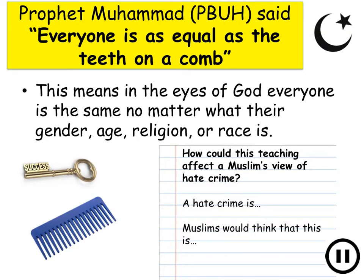It's time to look at another one of our key rules. This is a hadith: Prophet Muhammad, peace be upon him, said that everyone is as equal as the teeth on a comb. This means that in the eyes of God everyone is the same, no matter what their gender, age, race or religion is. Write down how you think this teaching could affect a Muslim's view of a hate crime. Define a hate crime first, then tell me how Muslims would see it and what they would think about it. Pause the video now and answer the question.